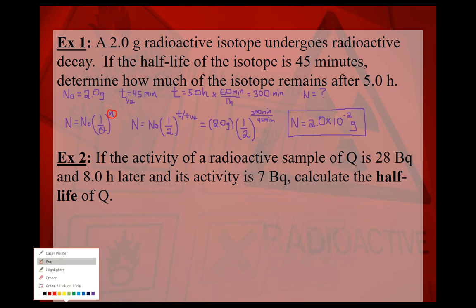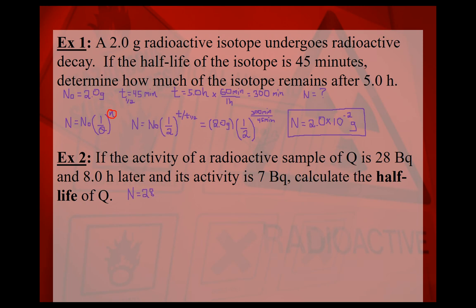For the second example, we're dealing with activity rather than mass. The activity of a sample of element Q is 28 becquerels, and eight hours later its activity is 7 becquerels. We want to calculate the half-life of Q. So N₀ = 28 Bq, N = 7 Bq, and the time elapsed is 8.0 hours. We want to find T½.